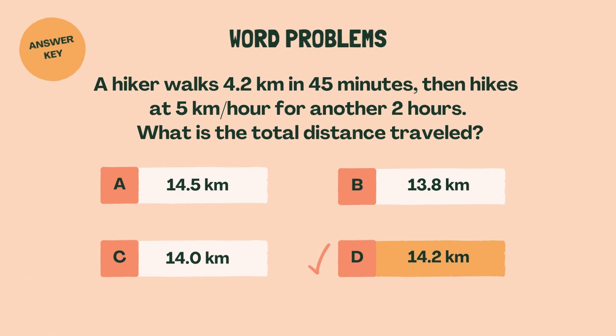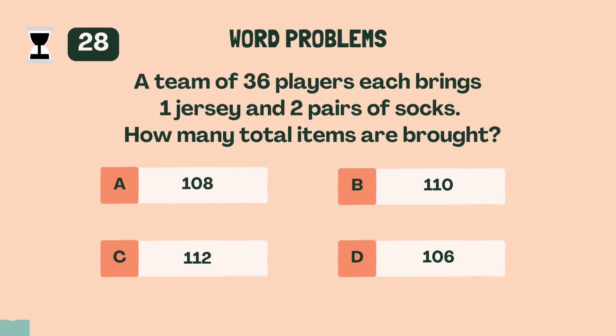A team of 36 players each brings one jersey and two pairs of socks. How many total items are brought? B, 108.